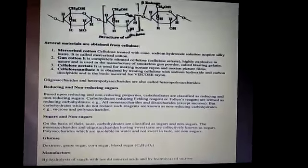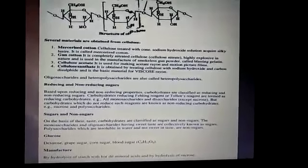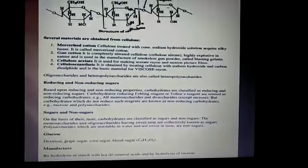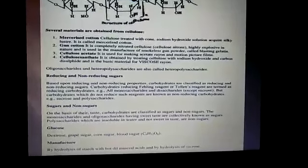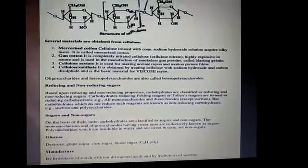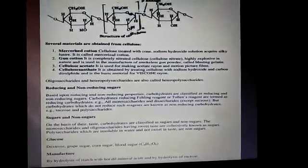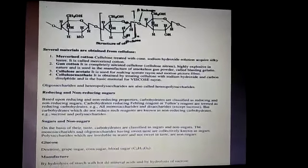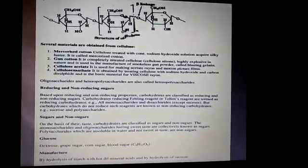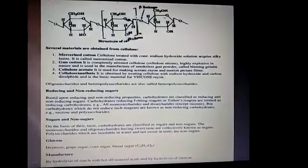Reducing and non-reducing carbohydrates: all those carbohydrates which contain an aldehydic or ketonic group in the hemiacetal or hemiketal form and reduce Tollens' reagent and Fehling's solution are called reducing sugars. Those which do not reduce these reagents are called non-reducing sugars. All monosaccharides — whether aldose or ketose — are reducing sugars. In disaccharides such as sucrose, the two monosaccharide units are joined through their reducing centres (aldehydic or ketone groups), making them non-reducing, while maltose and lactose, in which these groups are in hemiacetal or hemiketal form, are reducing sugars.